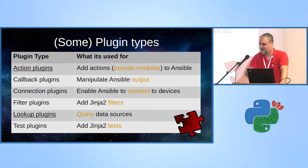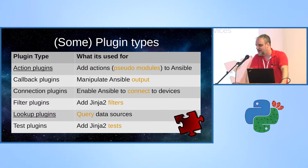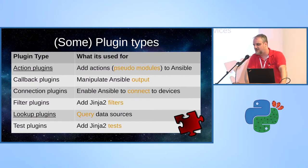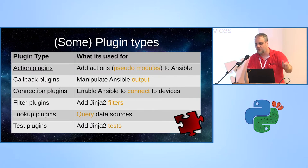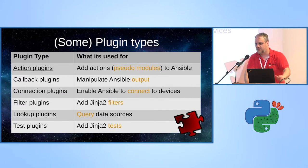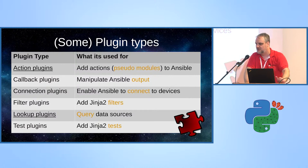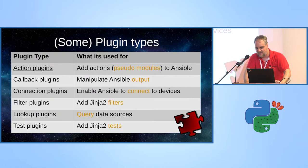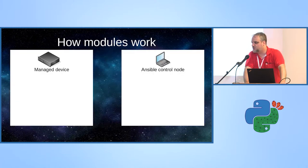Just a little example — I'm not going to read all this table — of the amount of plugin types we have. The real list is about three times longer. For example, you have lookup plugins that let you query remote data sources from Ansible to get data from places, and you can have filter plugins that add filter functions to Jinja2. Just a couple of examples — you can look at this slide and see many other examples.